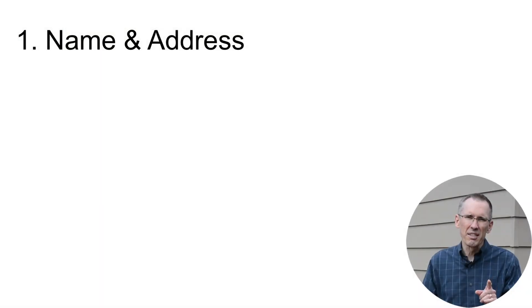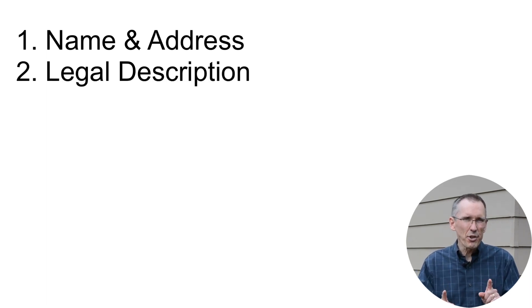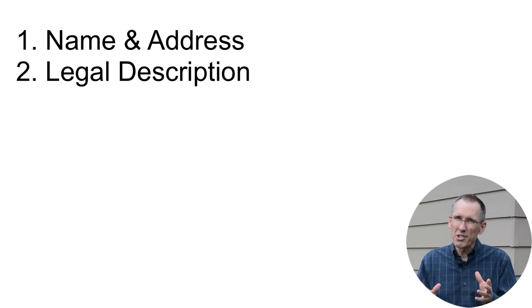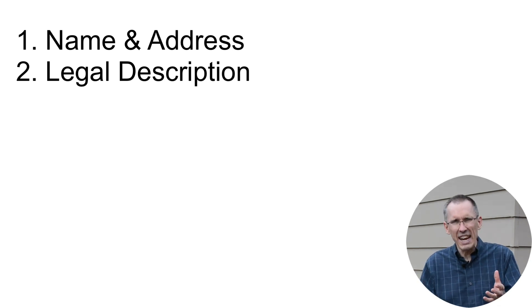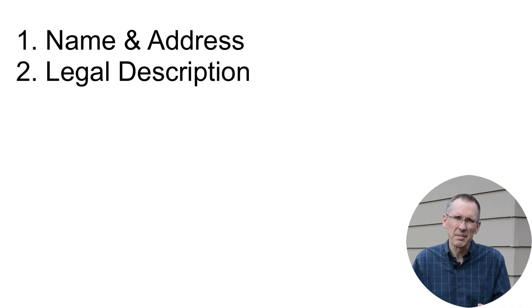Number one, your name and your address, of course. Number two, the legal description of your property. This is different than your address because it includes things like your township, your range, your section, your tax lot, that kind of a thing.